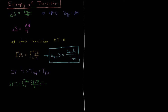Plus, during the melting process, we have ΔS of fusion — which we can write as ΔH of fusion, the enthalpy of fusion, the amount of heat required to melt the substance, divided by the temperature of fusion.